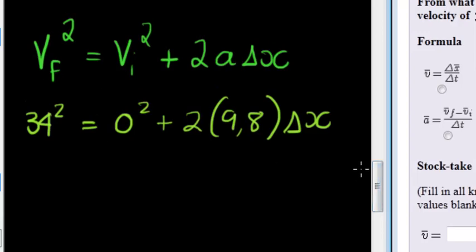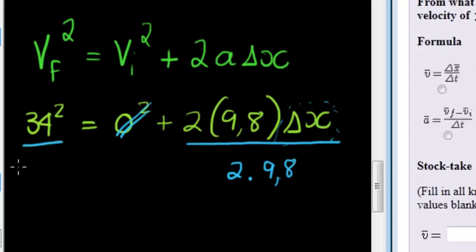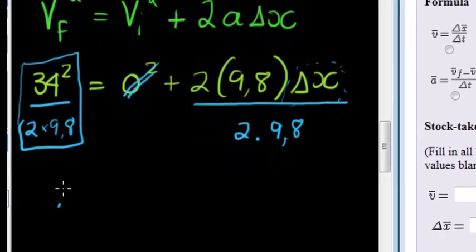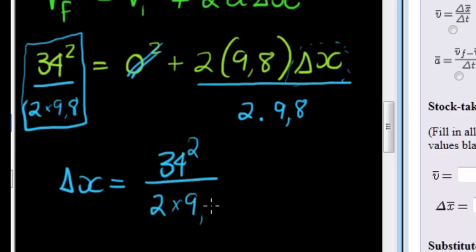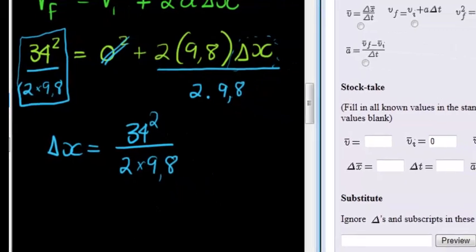All we need to do now is solve for this variable. On this side I see that zero squared is just zero. So I'm left on the right hand side with 2 times 9.8. So I'll have to divide with 2 times 9.8. And if I do that on both sides, I get a formula here for the change in displacement. That means the change in displacement is equal to 34 squared divided by 2 times 9.8. Let's use our calculator to get that answer.